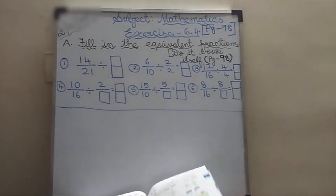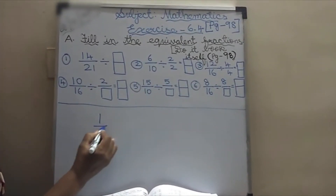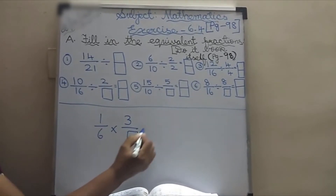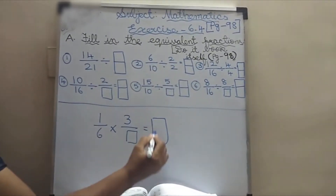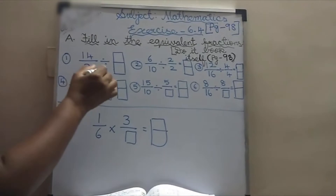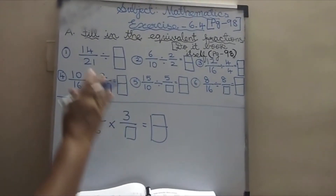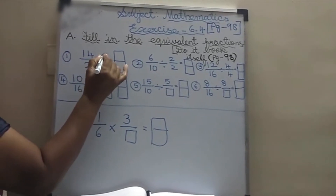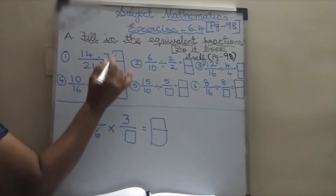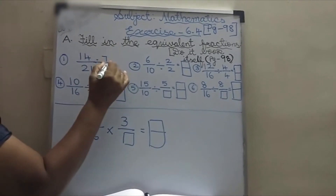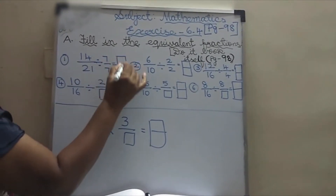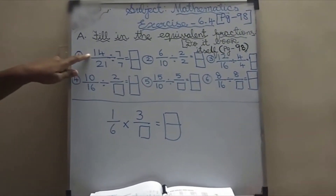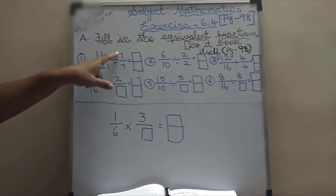Like this we learned: 1 by 6 into 3, 1 by 6 into dash — like this we learned. Now we are going to learn the division. First one: 14 divided by 21, divided by 7 by 7, is equal to what? You have to be thorough in multiplication tables so that it will be very easy for you.